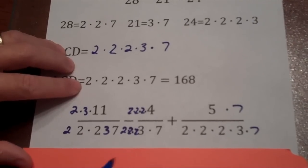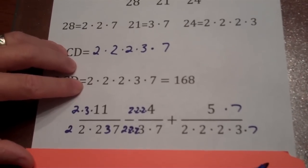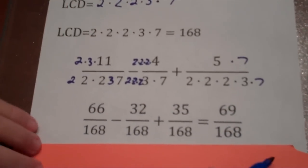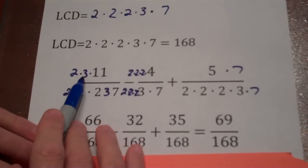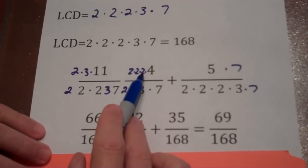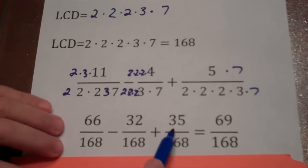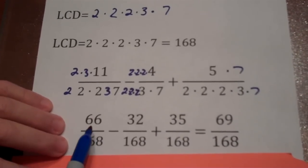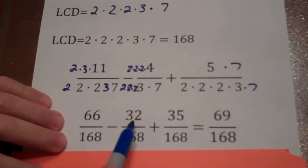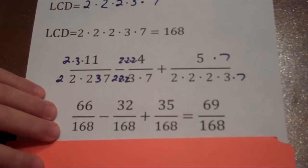Now, the denominators are all identical, 2, 2, 2, 3, 7 in every case, so they're all 168. We'll have to do a little arithmetic here for our numerators. 2×3 is 6×11 is 66. 2×2 is 4×2 is 8×4 is 32. And 5×7 is 35. So now let's go ahead and do our addition and subtraction. 66 minus 32 is 34. 34 plus 35 is 69.